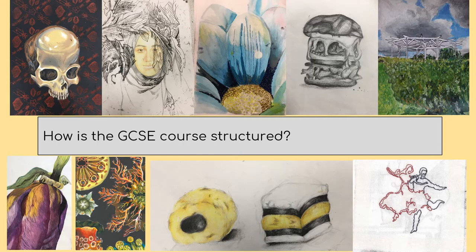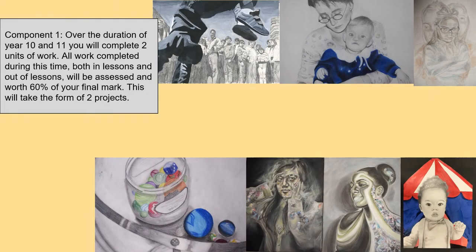This is a basic overview of the course. In Year 9 you will be introduced to a variety of media and techniques which you will then be able to apply in Year 10 and 11, where you will be completing your actual GCSE coursework. 60% of your final mark is the two projects you will be completing during lessons and outside lessons, with your teachers' guidance, and you will be given a couple of themes to choose from — it will be your decision how you want to approach those themes.